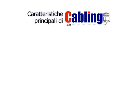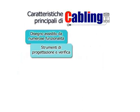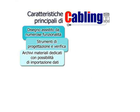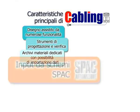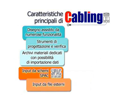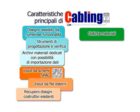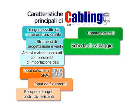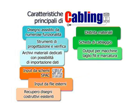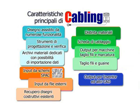Caratteristiche principali di Cabling: disegno assistito da numerose funzionalità, strumenti di progettazione e verifica, archivi materiali dedicati con possibilità di importazione dati, input da schemi SPAC, input da file esterni, recupero di segni costruttivi esistenti, distinta materiali, scheda di cablaggio, output per macchine, taglio fili e marcatura, taglio fili e guaine, output per Inventor ed altri CAD.